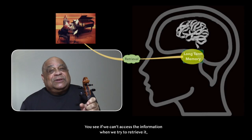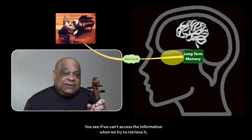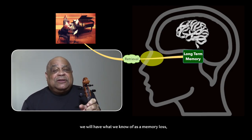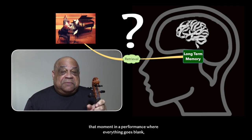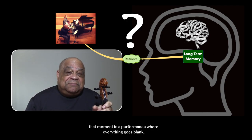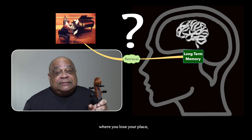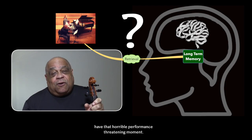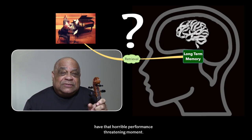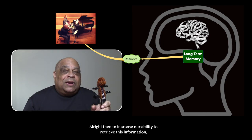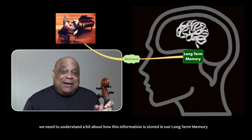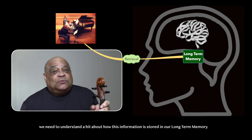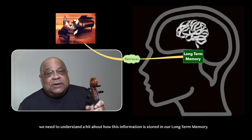You see, if we can't access the information when we try to retrieve it, we will have what we know of as a memory loss, that moment in a performance where everything goes blank, where you lose your place, have that horrible performance-threatening moment. All right, then, to increase our ability to retrieve this information, we need to understand a bit about how this information is stored in our long-term memory.